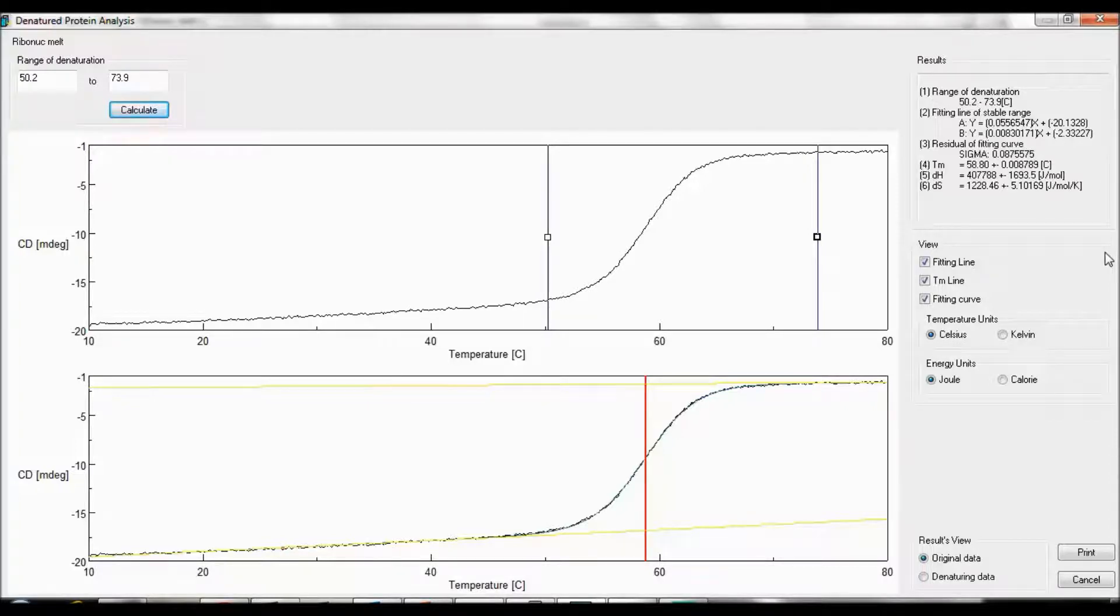The fitting line is the line of the stable range and are shown by the yellow bars. The melting temperature line is the vertical red line indicating the denaturation temperature. Confidence intervals can be obtained by selecting fitting curve.